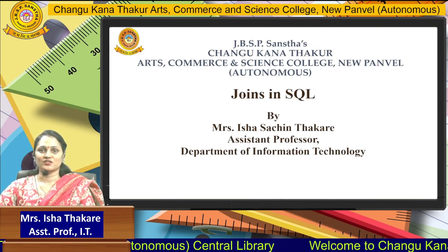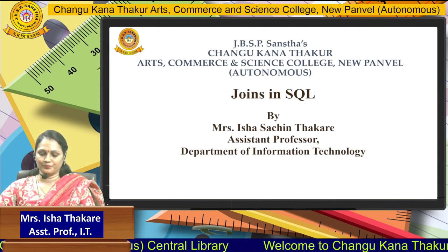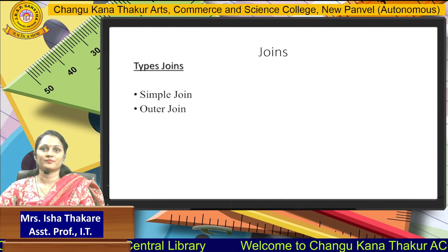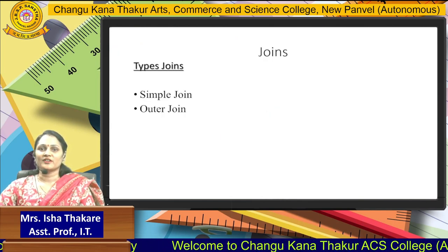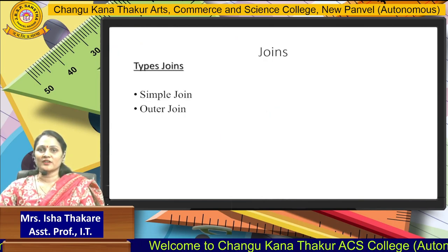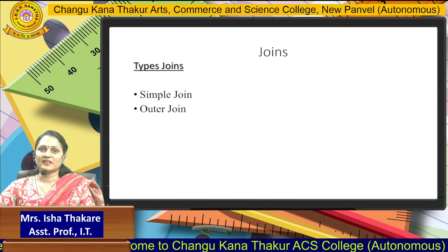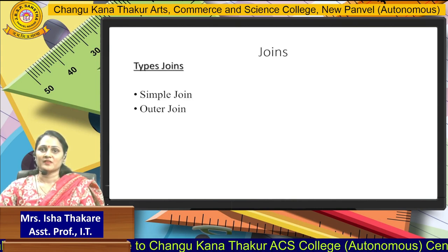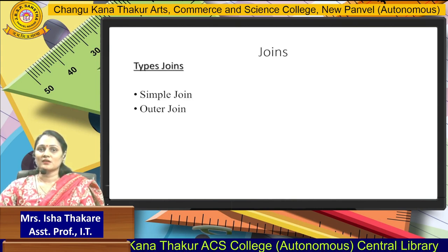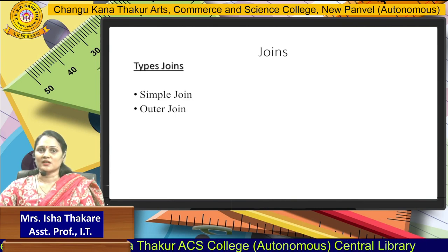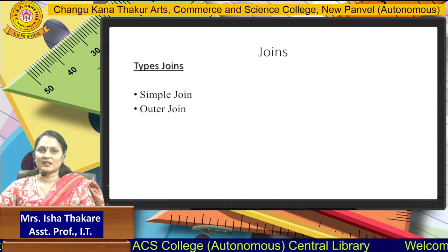Welcome to our session for Joins in SQL. Joins join two tables in a database. There are two types of joins in the explicit type: the simple join and the outer join.